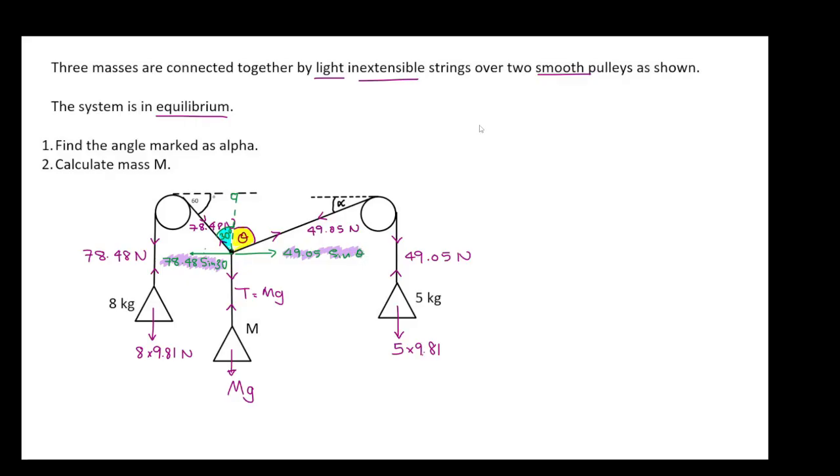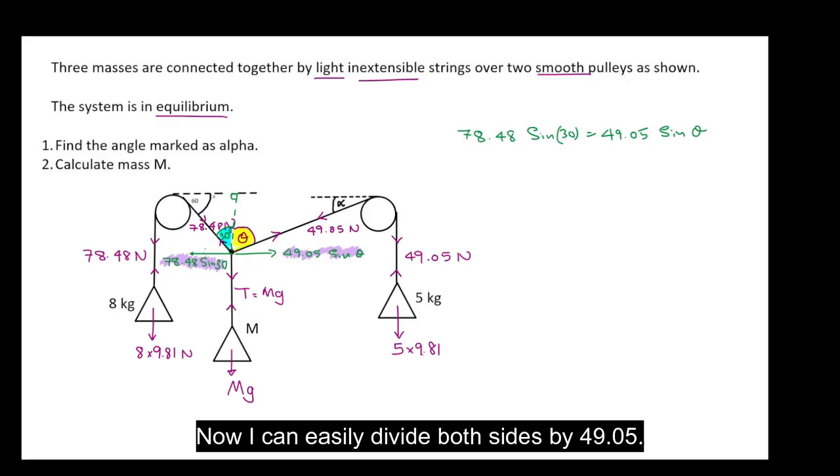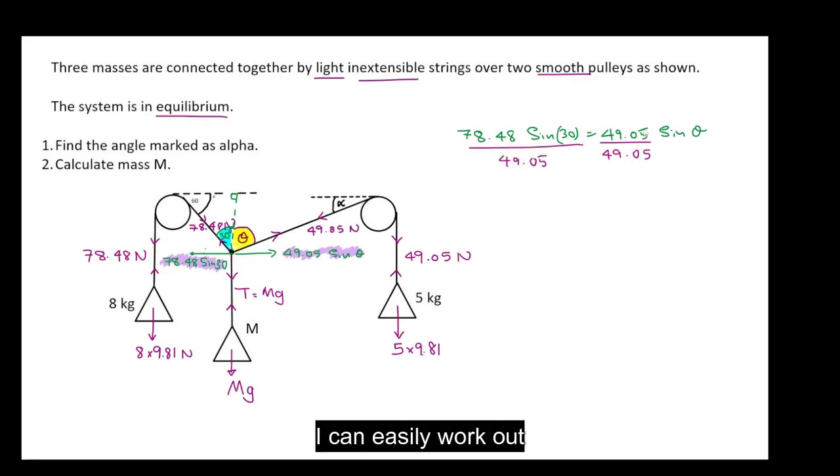So let's write this. Now I can easily divide both sides by 49.05. So I can easily work out the value of theta by taking the inverse sine of this part here.